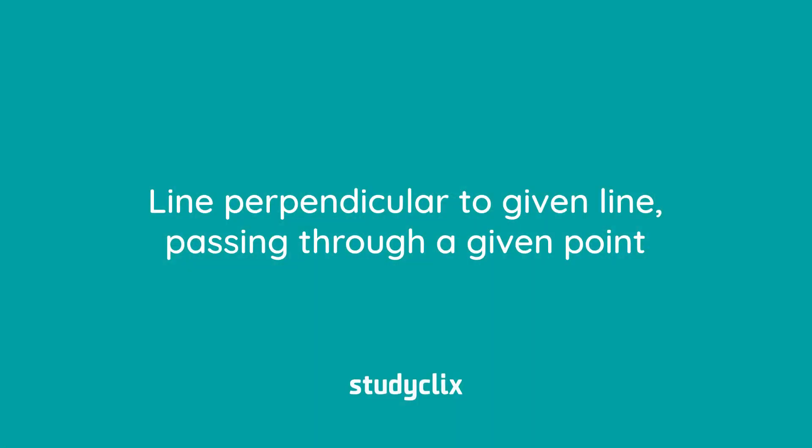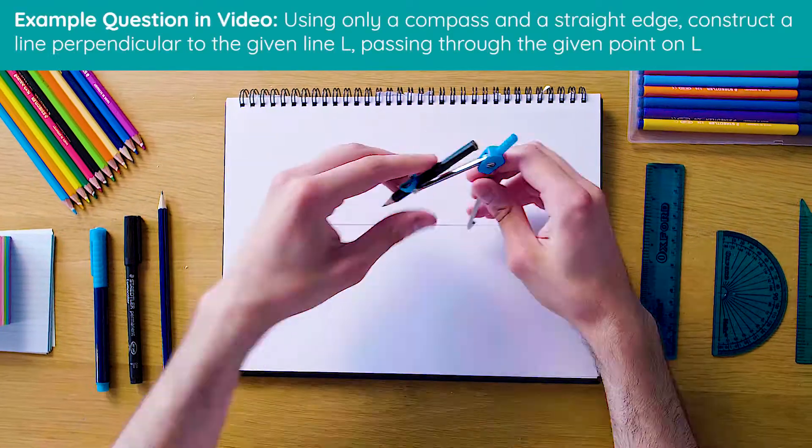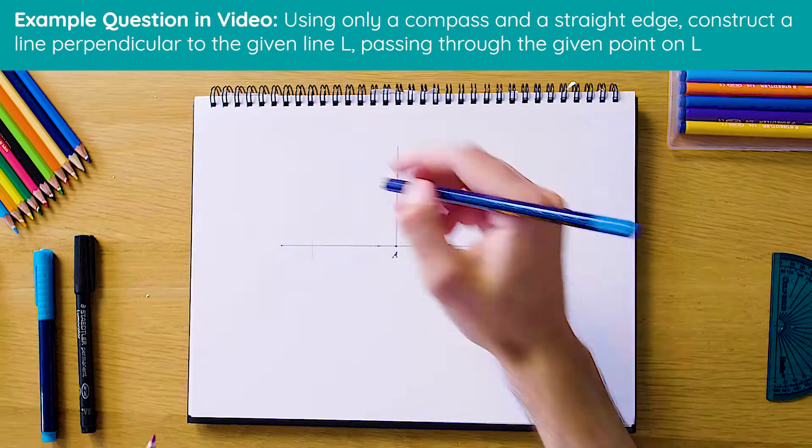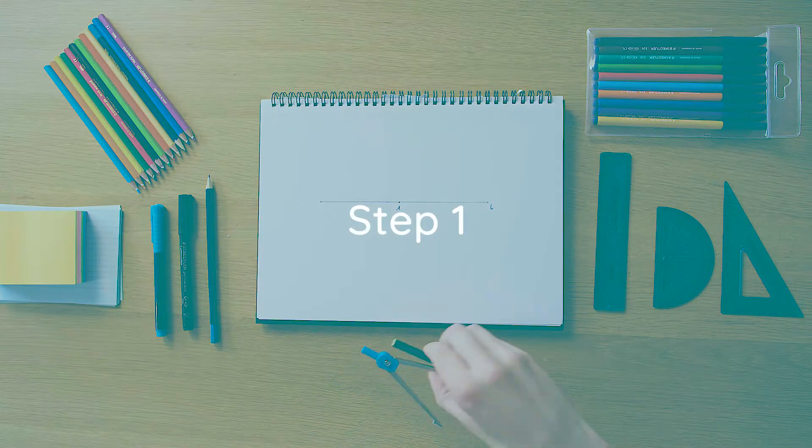Let's see how it works. Okay guys, this is what our final product will look like once we're finished. As you can see, we have a perpendicular line to the line L and it passes through the point A which is on L. So let's see how this is done from scratch.